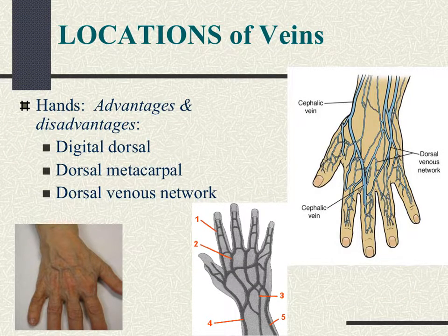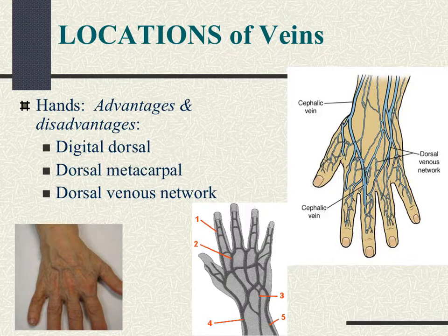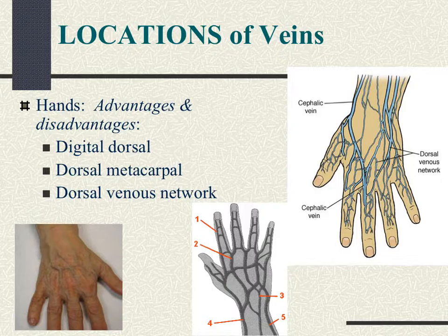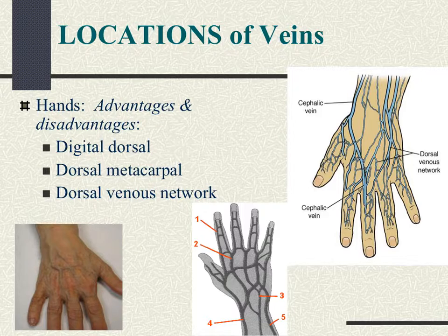Refer to page 110 in your book for the locations of veins. These are the hand veins: digital dorsal, dorsal metacarpal, and the dorsal venous network. For the digital dorsal, use only a small gauge like a 22 or 24 gauge, and it needs good support — a tongue blade can help. It's very accessible but not good for large volumes or irritating solutions. The dorsal metacarpal and venous network also need support, are very accessible and distal, but can easily dislodge and are not good for large volumes or irritating solutions. Don't use for CT scan power injections either.